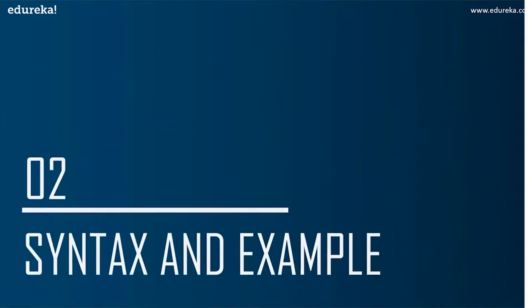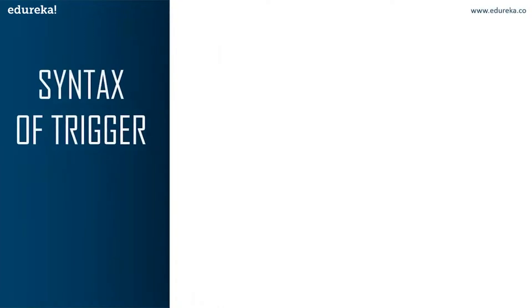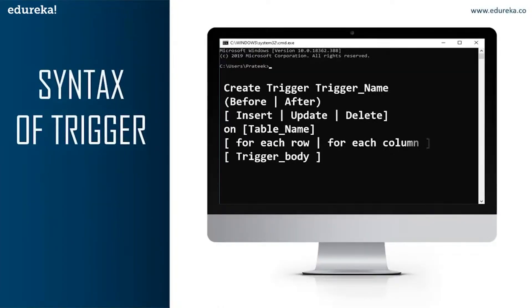Let's head to the next topic: syntax and example of a trigger. The first part is CREATE TRIGGER — these two keywords specify that a trigger block is going to be declared. The next part is the trigger name, which must be unique and shouldn't repeat. The next part is BEFORE or AFTER, which specifies when the trigger will be executed.